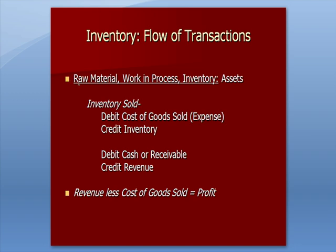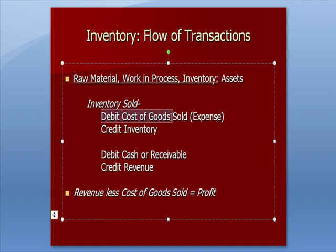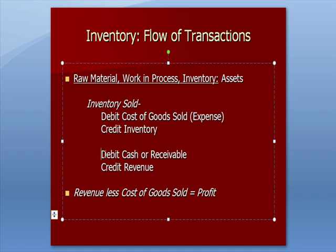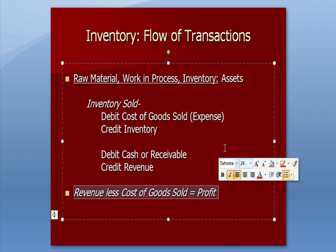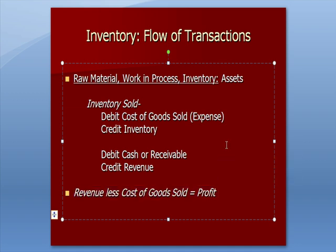We have raw material, work in process, and inventory that are all assets. You can imagine those pairs of jeans sitting on the factory floor. Once the inventory is sold, we debit cost of goods sold, which is an expense, and we credit to reduce inventory. We also debit cash or a receivable. We debit and then we credit revenue. So the revenue less the cost of goods sold is our profit. That's our basic flow of inventory transactions.